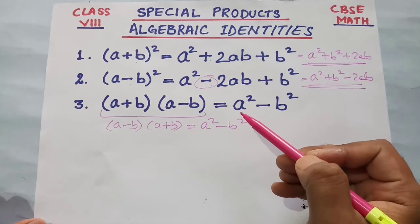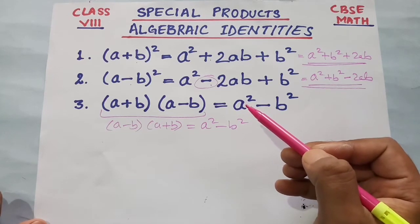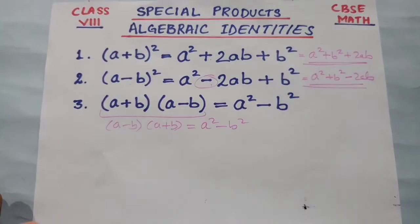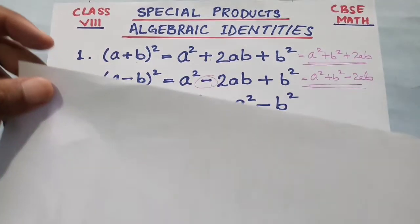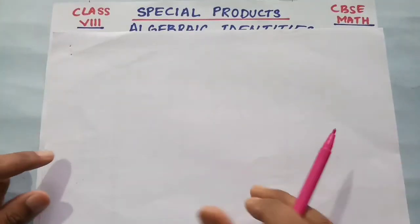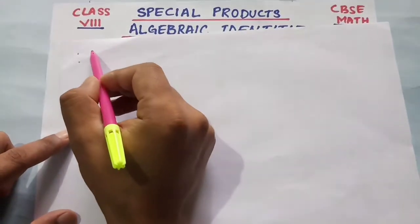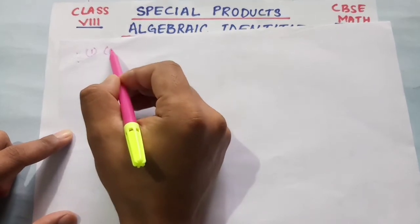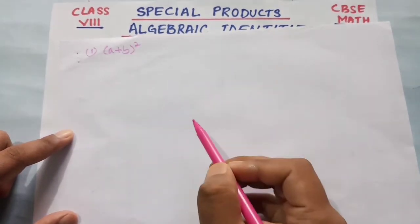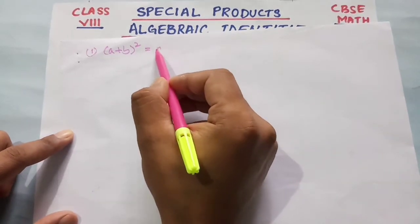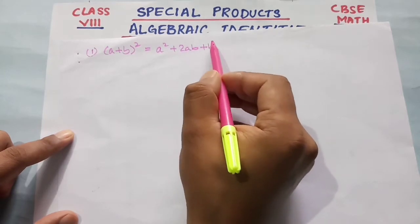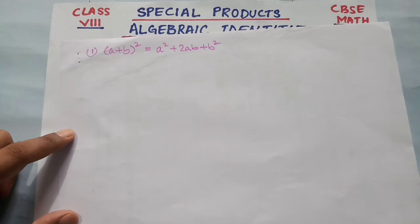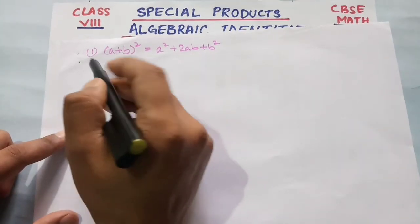These are our three algebraic identities under this topic. Now let's prove them — let's show how these identities come about. First, our number one identity is (a + b) whole square, which equals a square plus 2ab plus b square. We will now solve this proof.